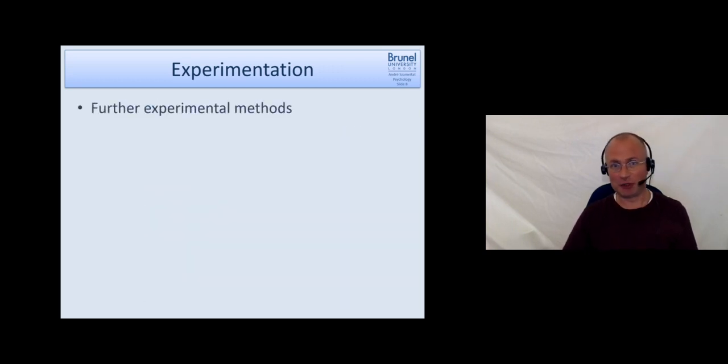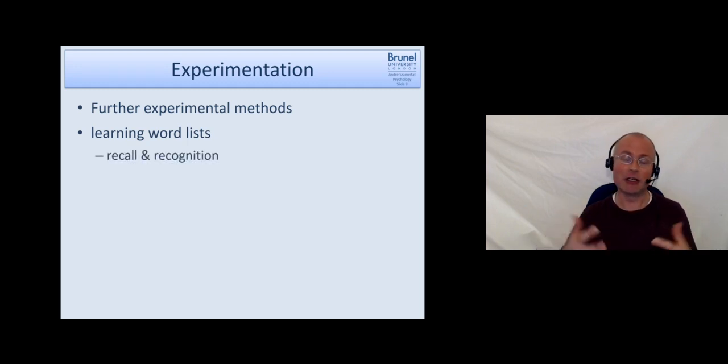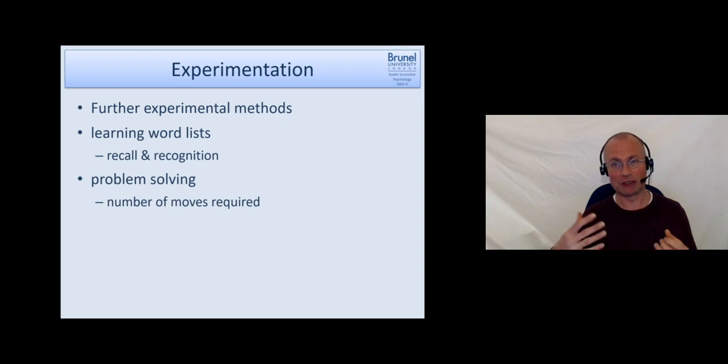Other experimental methods. This is probably the most common one across all of cognitive psychology, but there are quite a few others as well. A very popular one is like learning word lists or lists of letters or whatever, in the area of memory in particular, long-term memory as well but also short-term memory stuff like that. This recall and recognition, we don't use then necessarily only response times but how many items did they correctly recall and things like that. Another example is in research on problem solving, one thing people often look at is how many moves are required to solve the problem.